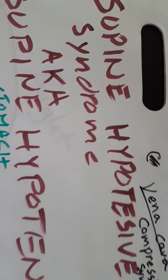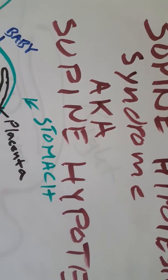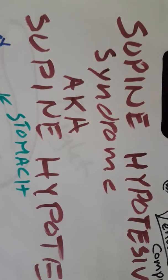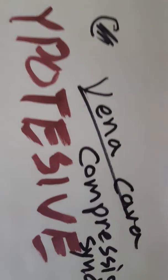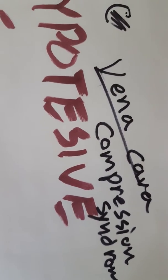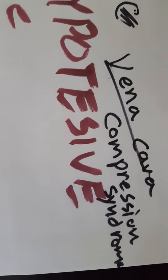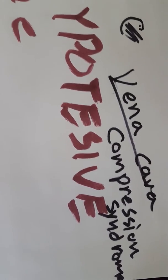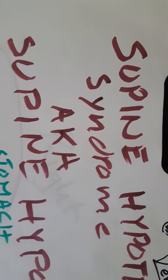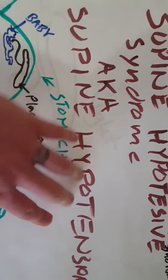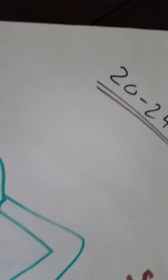Today we are going over supine hypotensive syndrome, also known as supine hypotension. Just for the sake of your test, you might also see it like this: vena cava compression syndrome. I rarely ever hear it like this, but this is a different way of identifying supine hypotensive syndrome. Usually you'll see it as supine hypotension - that's the normal way of saying it.